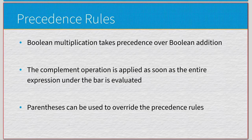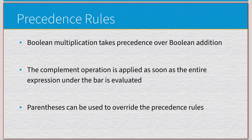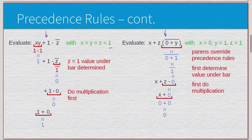We have two expressions to evaluate. The first one: x times y plus one times the complement of z, with all variables set to one. We get one times one, which is one, plus one times the complement of z. The complement of z is zero, so one times zero is zero, and one plus zero is one.